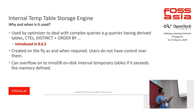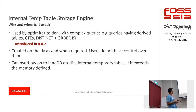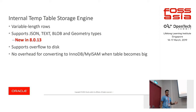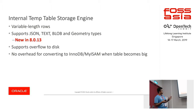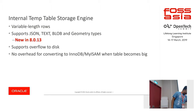Internal temp tables are used for complex queries like CTEs, correlated expressions, distinct plus order by, and other query types. The improvements in the latest versions of 8.0 include support for JSON, text, blob, and geometry data types, and it supports overflow to disk. There's no overhead when converting from in-memory to disk-based tables in InnoDB — it internally converts to disk-based InnoDB tables when the table becomes too big.